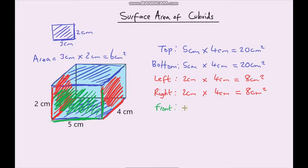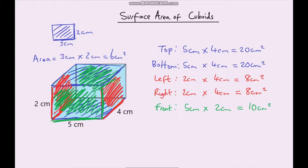So the front is going to be 5cm multiplied by 2cm, which gives us 10cm². And then finally, the back is this area here. So again, it's going to be 5cm, and then the height is 2cm. 5 times 2 gives us 10cm².